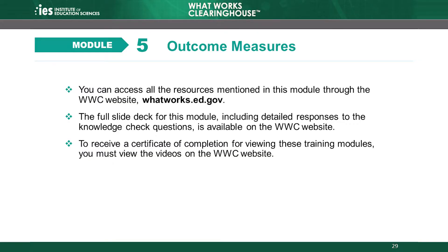This concludes our review of Outcome Measures, Module 5 of the WWC's Group Design Standards Training. We reviewed the definition of an outcome measure and learned why the WWC assesses outcome measures used to demonstrate impacts in evaluations. We also reviewed how to describe and apply the WWC outcome measure standard. You can access all the resources mentioned in this module through the WWC website at whatworks.ed.gov. The full slide deck for this module is available on the WWC website, including detailed responses to the knowledge check questions.